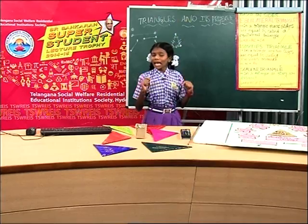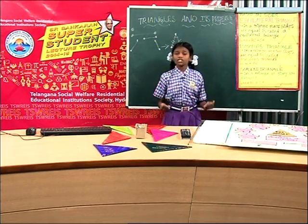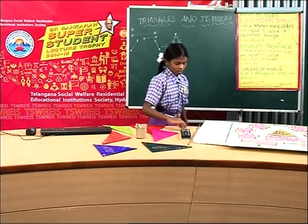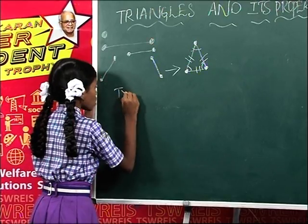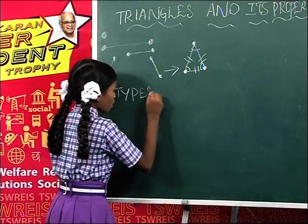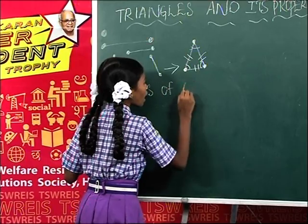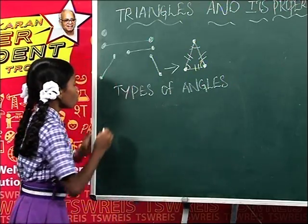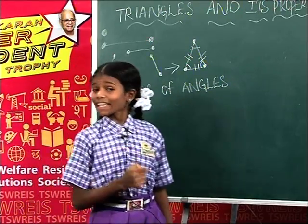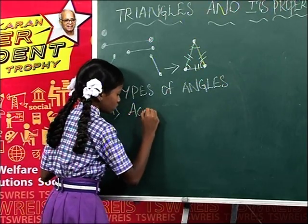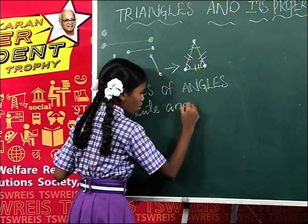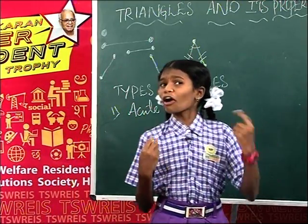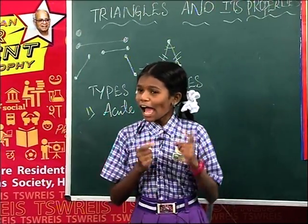Now based on angles. Before going to learn this, friends, we should know some types of angles and their measures. Types of angles: first, acute angle. If the angle is between 0 degrees and 90 degrees, it is called an acute angle.